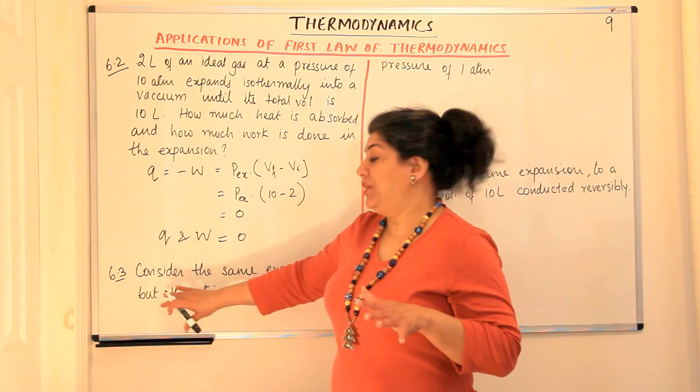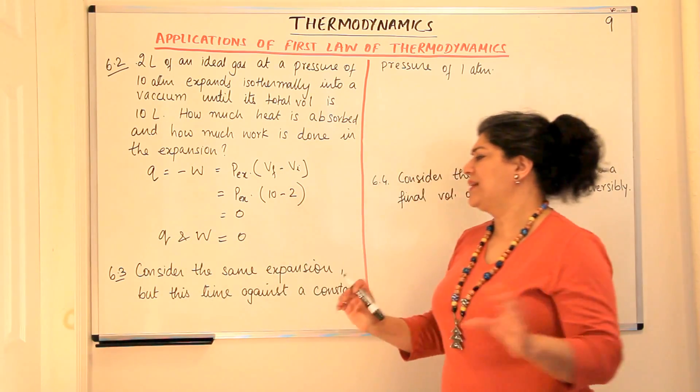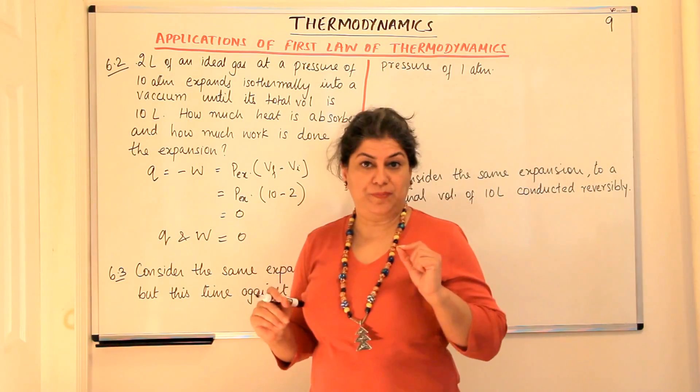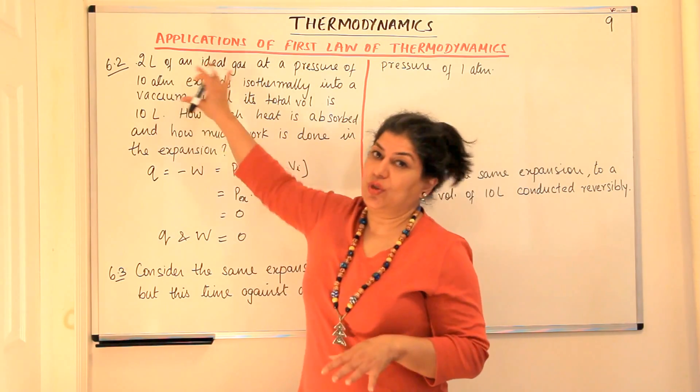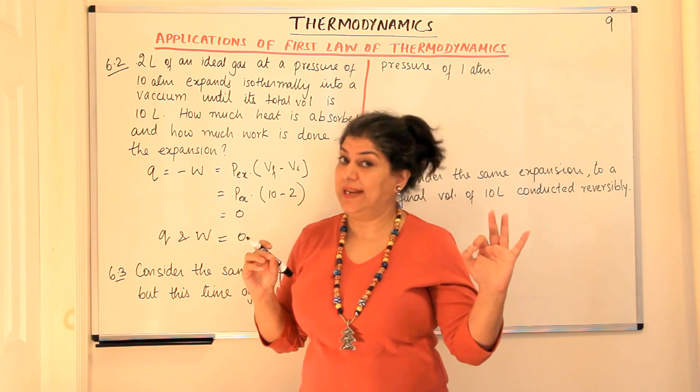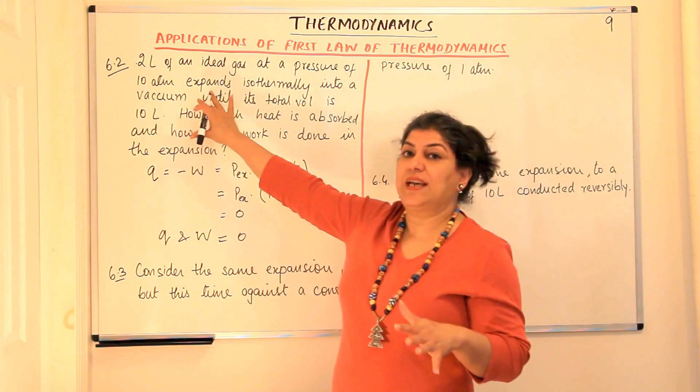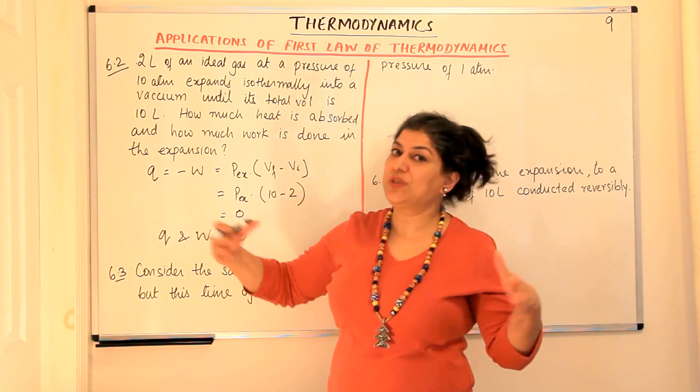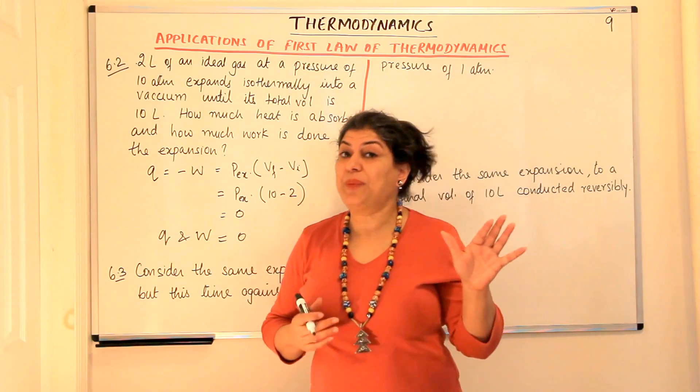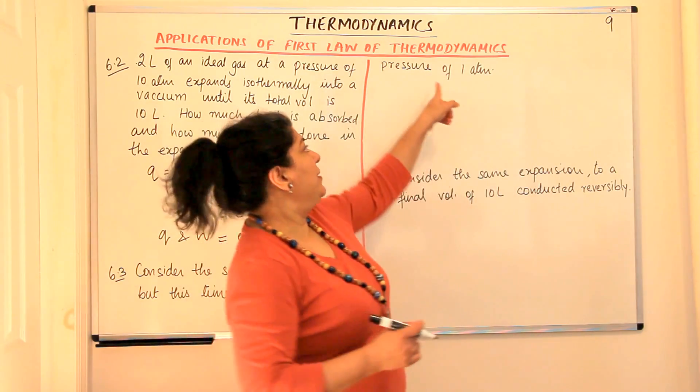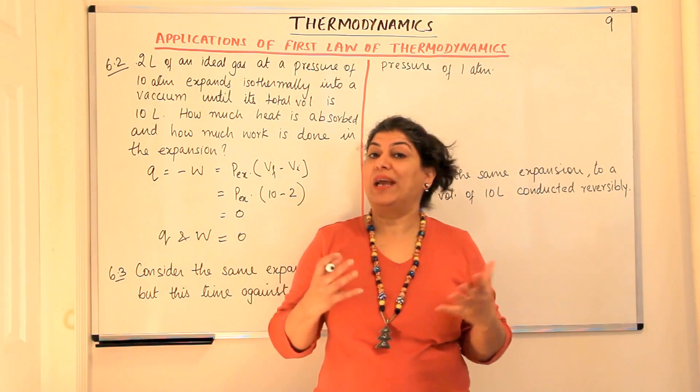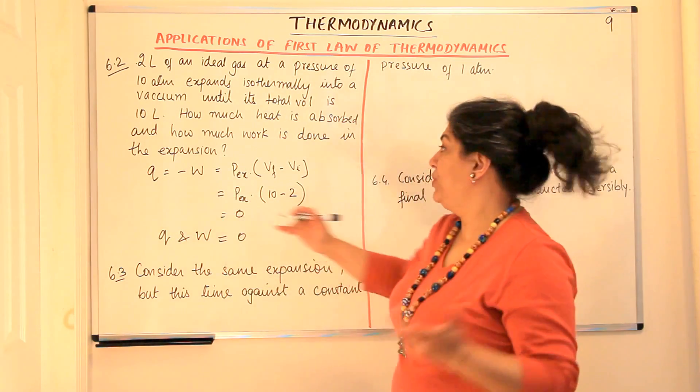Now the question 6.3 says that consider the same expansion but this time it is against a constant pressure of one atmosphere. So what has changed here? This was an isothermal expansion of a gas, ideal gas from 2 liters to 10 liters and in the first case the gas was expanding, it was a free expansion that is it was expanding in vacuum. Now it is not expanding in vacuum. There is atmospheric pressure and the pressure is of one atmosphere. So now what if we have to calculate the work and the heat?